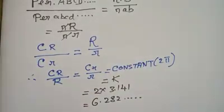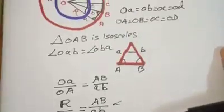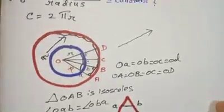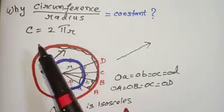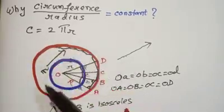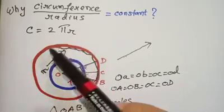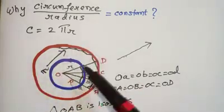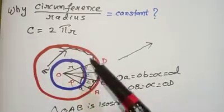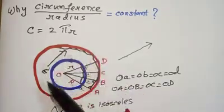The perimeter of ABCD... (n × AB) upon the perimeter of the smaller circle equals a constant. The circumference upon radius is always a constant, deriving from the formula C = 2πr. The essence is: divide a circle into n-sided polygons, let n grow, and the total circumference of that polygon becomes equal to the perimeter — so the n-sided polygon's perimeter now equals the circumference.